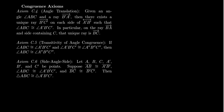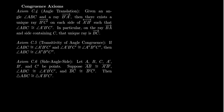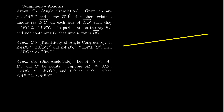Axiom C4 states: given an angle ABC and given a ray B'A', then there exists a unique ray B'C' on each side of line A'B' such that angle ABC is congruent to angle A'B'C'. In particular, on the ray B'A' and on the side containing point C, that unique ray coincides with BC. So we have some angle ABC where A and C are points and B is the vertex, and we have some ray B'A' given below.